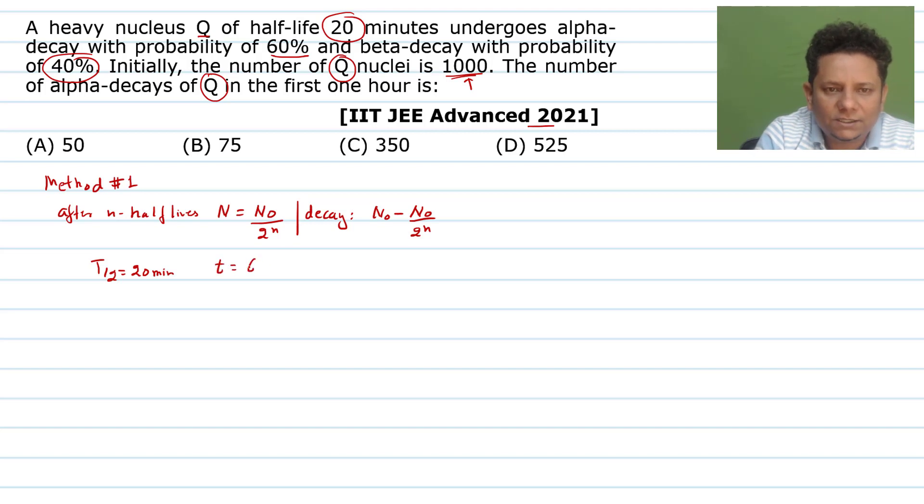And your total time is equal to 60 minutes. So this means your three half-lives have occurred. Three half-lives have passed, meaning n will be equal to 3. So if we insert this here, then your decay, how many nuclei decayed, that will be equal to N₀, which is 1000, minus N₀, 1000 divided by 2 to the power 3. If you calculate this, we can take 1000 common, 2 to the power 3 is 8, so 8 minus 1, which is 7 by 8. This much has decayed.